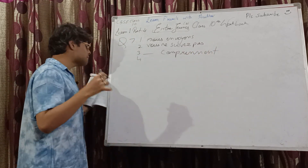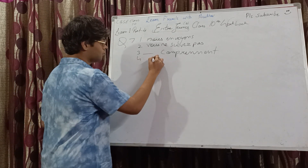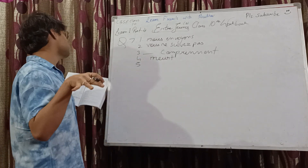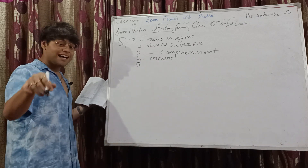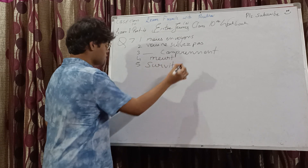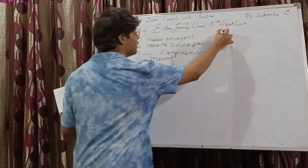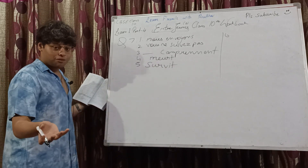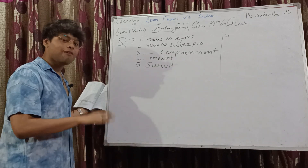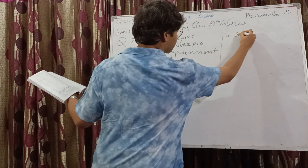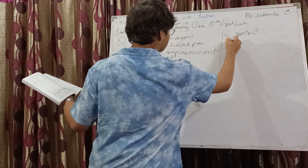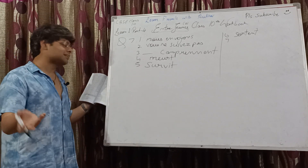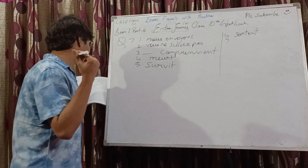Fourth one: cette plante mourra sans eau — this plant will die without water. Fifth: cet animal ___ à des températures très basses — this animal survives at very low temperatures. Sixth: il ___ malgré le mauvais temps — sortir should be used here. They go out despite the bad weather — il sort. Seventh: le guide nous ___ à travers les salles du palais — the guide drives us across the halls of the palace — conduit.